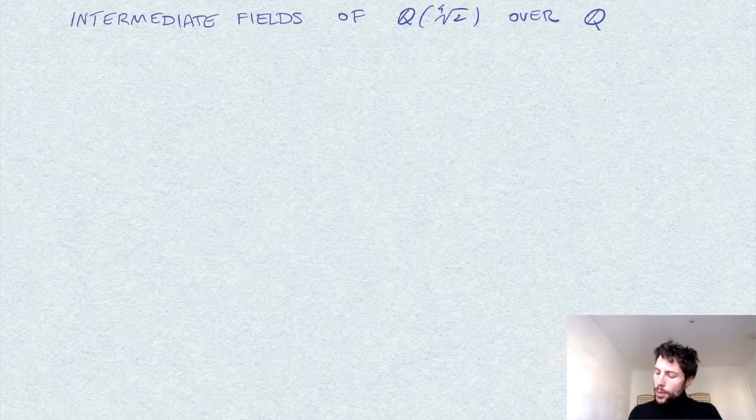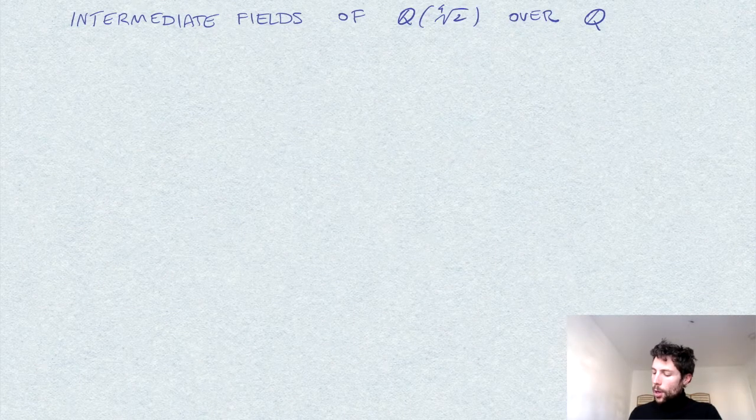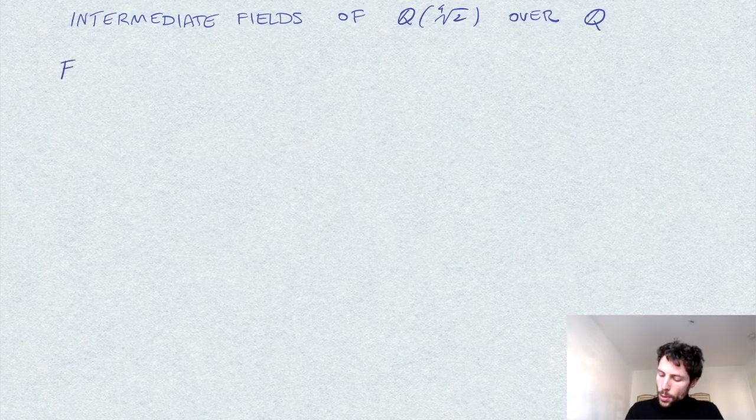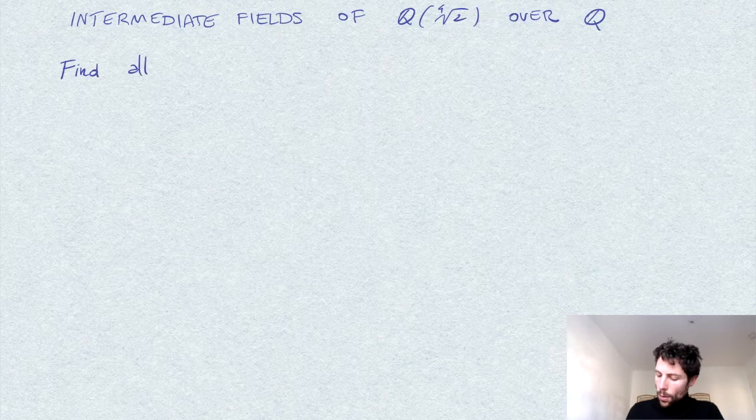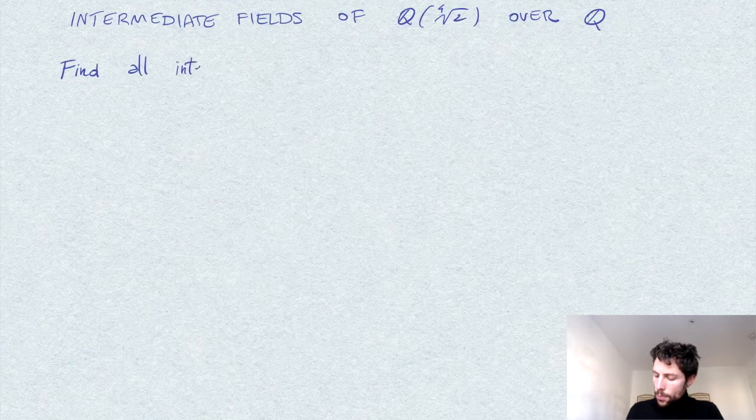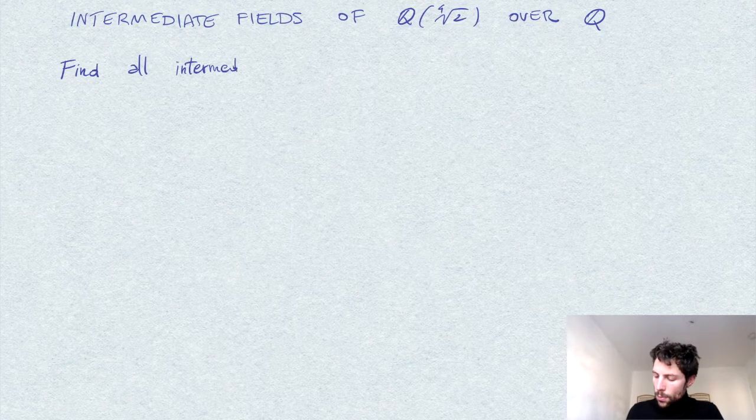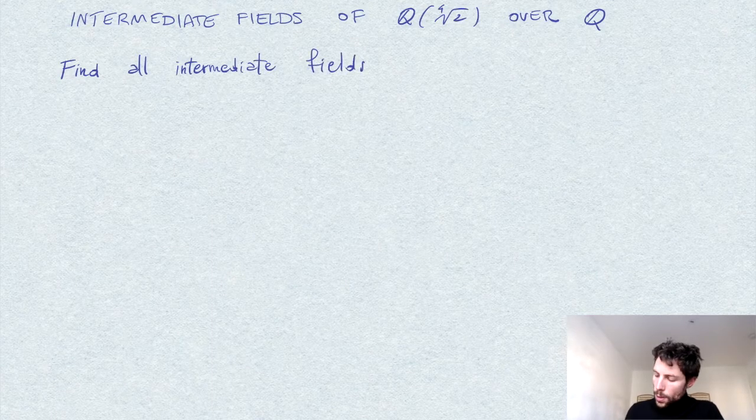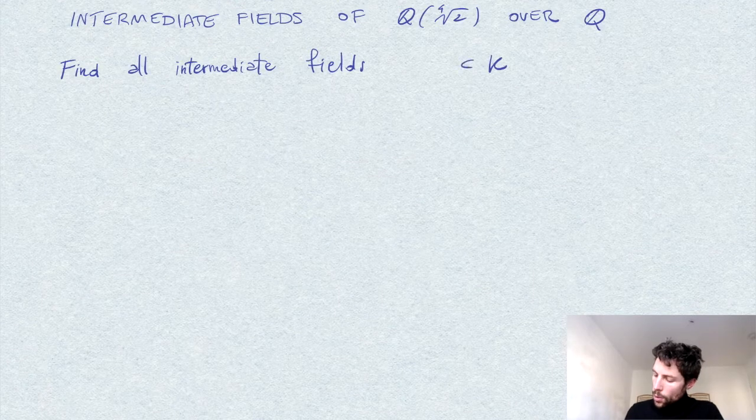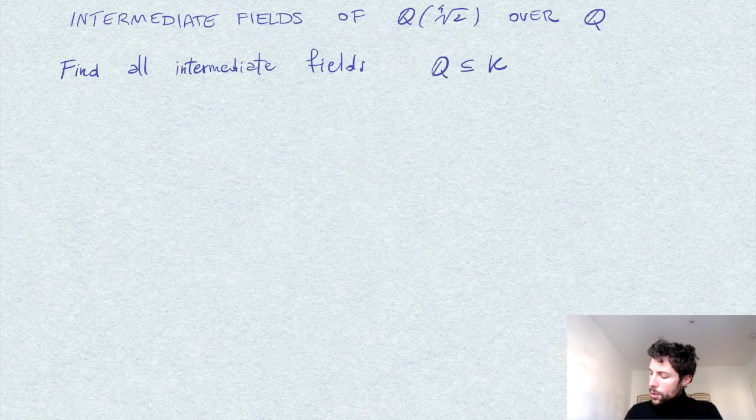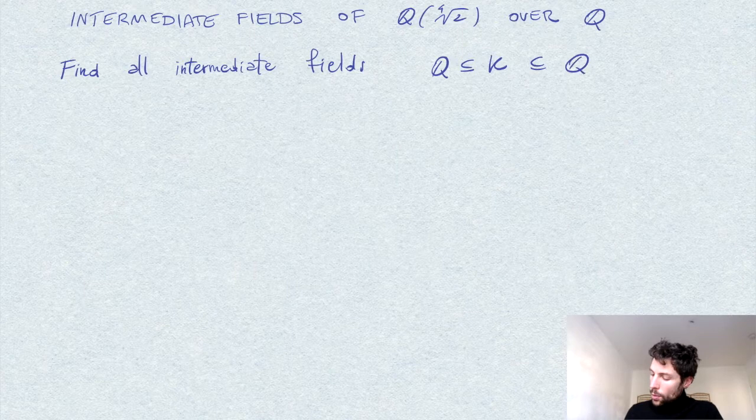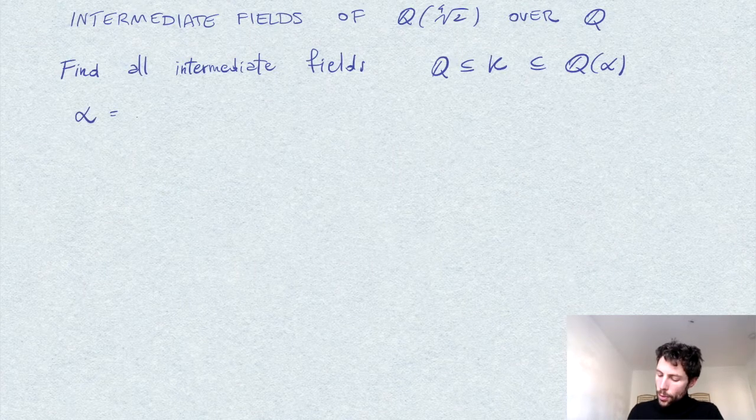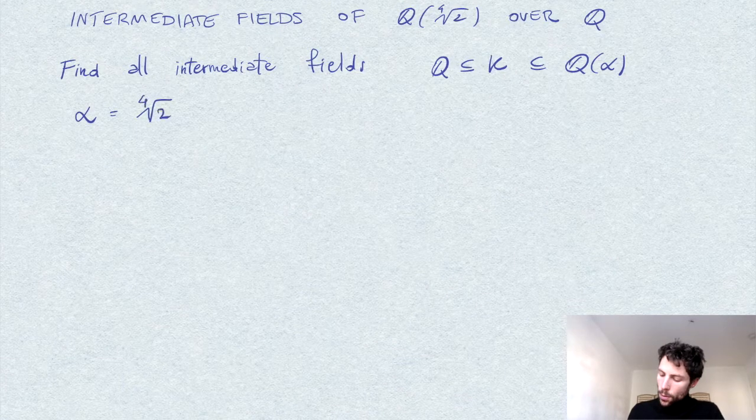In this exercise, we want to compute all intermediate fields of this extension of Q. Precisely, we want to find all fields K between Q (the rational numbers) and Q(α), where α is the fourth root of 2.